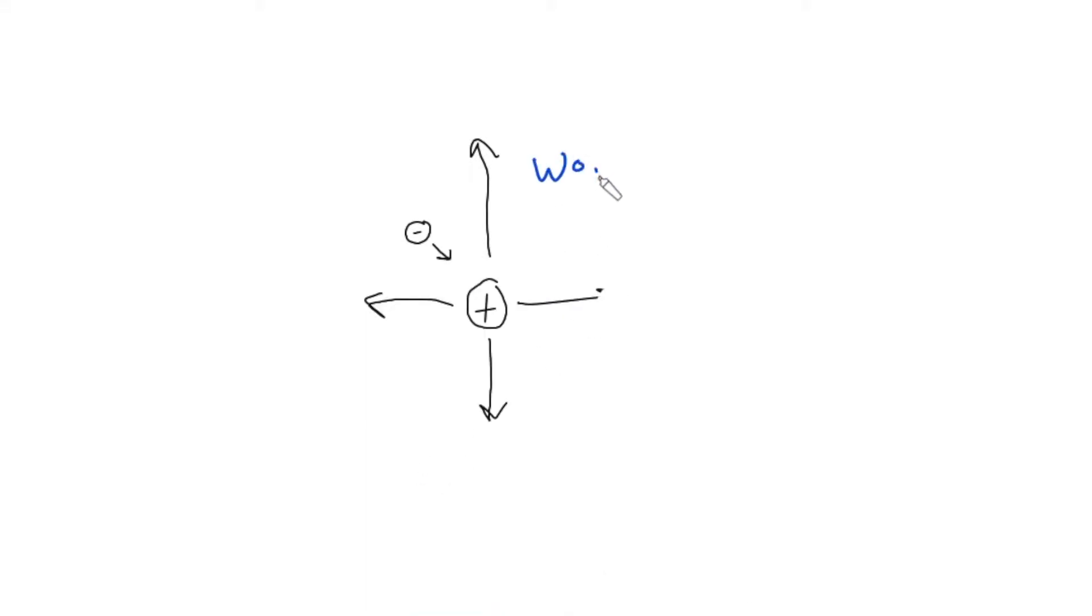So we'll look at the work done against an electric field. Now when an object moves from one point here to another, work is done. And this work done against an electric field, we have a fancy name for it, and that is called potential difference. So potential difference is the work done against an electric field.